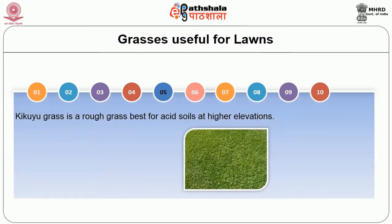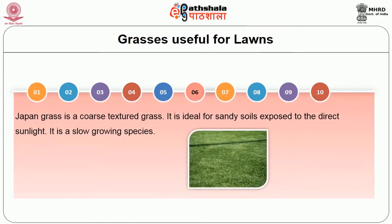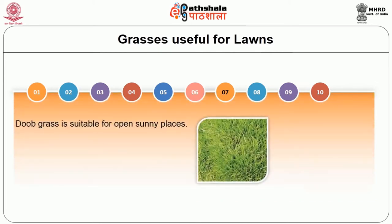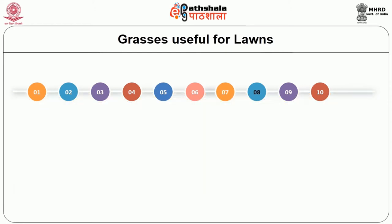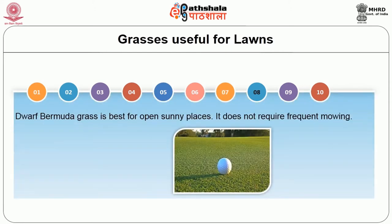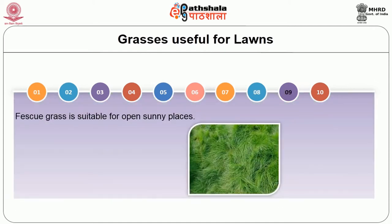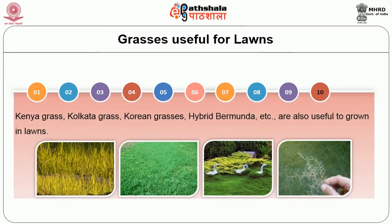Bluegrass is a rough grass best for acid soils at higher elevations. Japan grass is a coarse textured grass, ideal for sandy soils exposed to direct sunlight; it is a slow growing species. Dube grass is suitable for open sunny places. Dwarf Bermuda grass is also useful for open sunny places and does not require frequent mowing. Fescue grass is suitable for open sunny places. Kenya grass, Kulguta grass, Korean grass, and Hybrid Bermuda are also useful to grow in lawns.